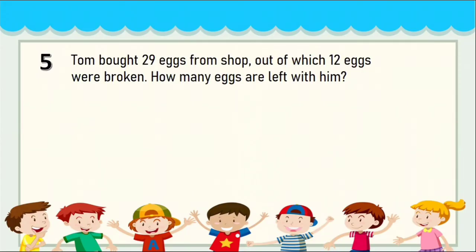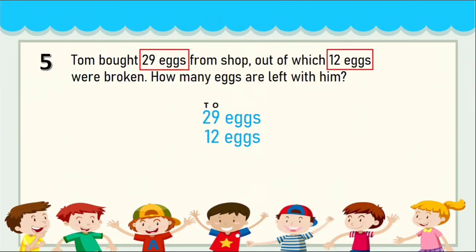Next question: Tom bought 29 eggs from the shop, out of which 12 eggs were broken — how many eggs are left with him? 'Left' means minus. Write one sentence: Tom bought 29 eggs — write '29 eggs.' Out of which 12 eggs were broken — write '12 eggs.' Tom has already lost 12 eggs because they are broken and of no use, so the number has been reduced.